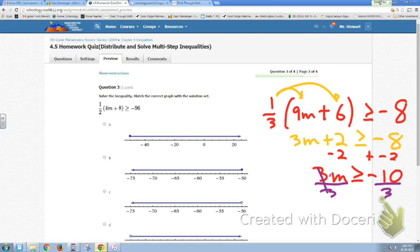And so I'm going to be getting the m is greater than or equal to a negative 10 thirds. Or I could call it 3 and a third. Whatever you'd like to call that. Or 3.33. It doesn't matter to me. But here's your solution.